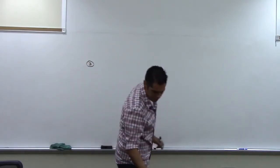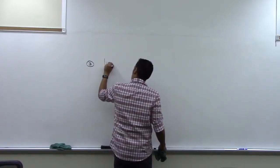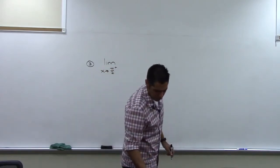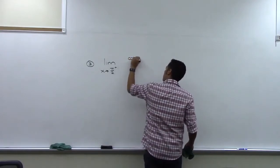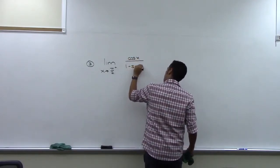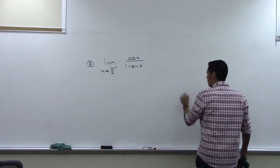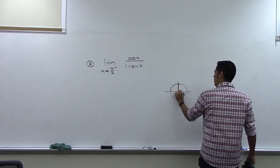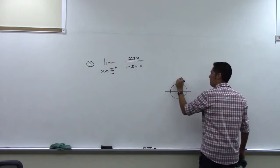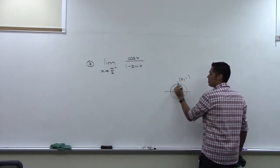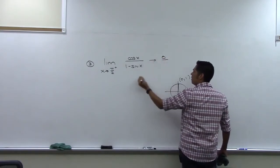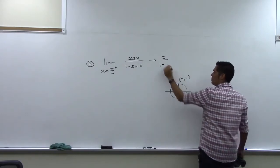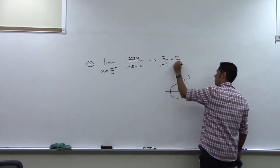We have the limit as x goes to π/2 from the right of cosine x over one minus sine x. Remember, π/2 is the angle straight up. Cosine of π/2 is the x-coordinate there, which is zero. On the bottom, one minus sine of π/2: sine of π/2 is one, so we have one minus one, which is zero. So we have zero over zero.